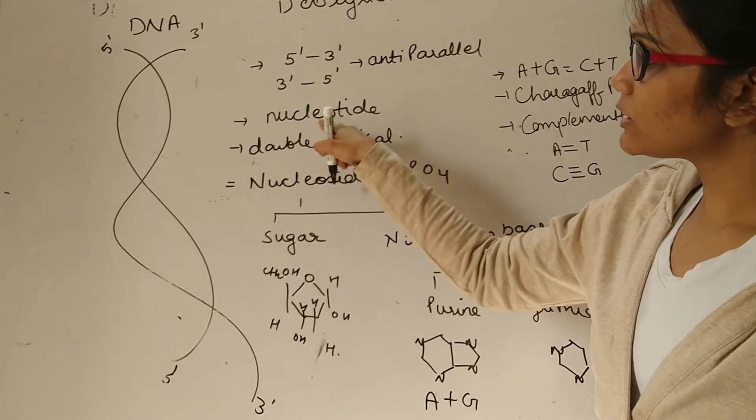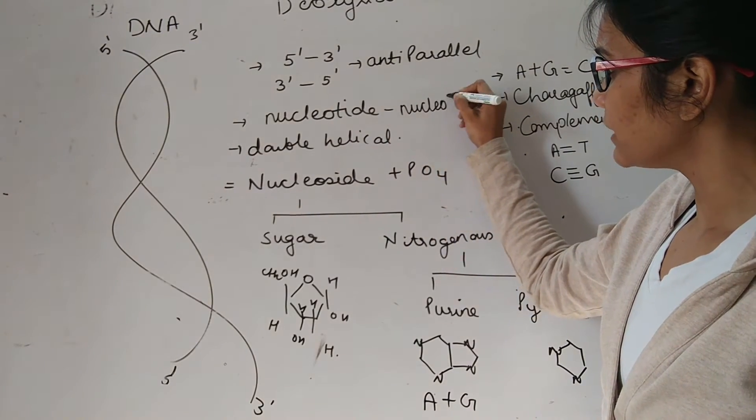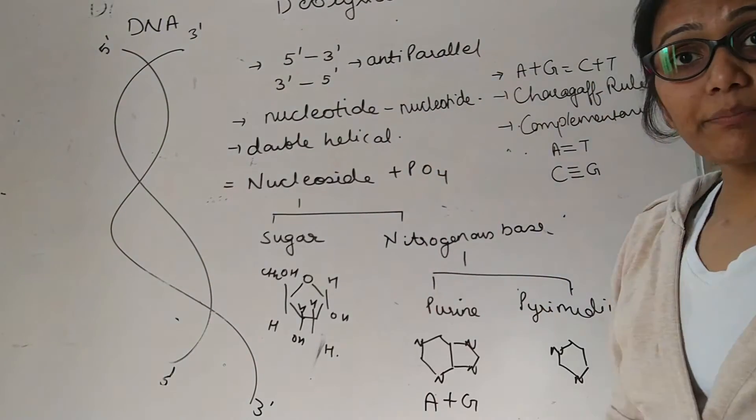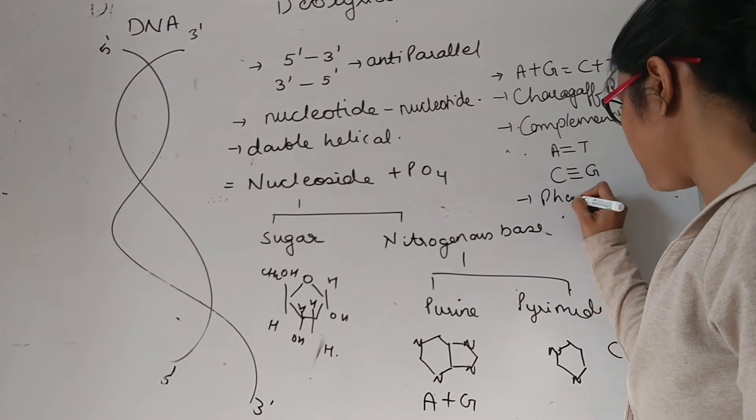The two nucleotides are attached to each other by a bond. And what type of bond is it? It is a phosphodiester bond.